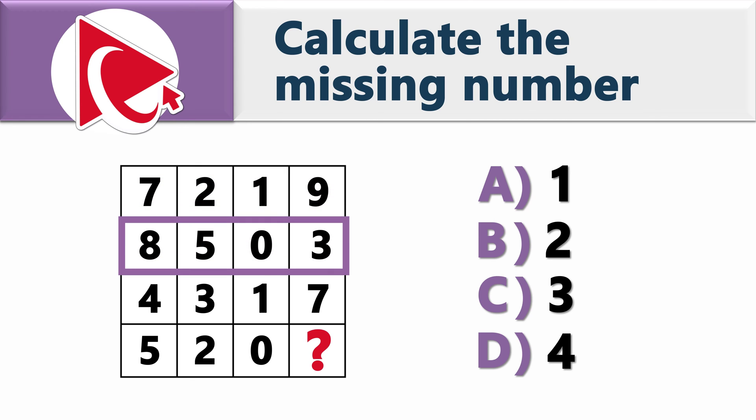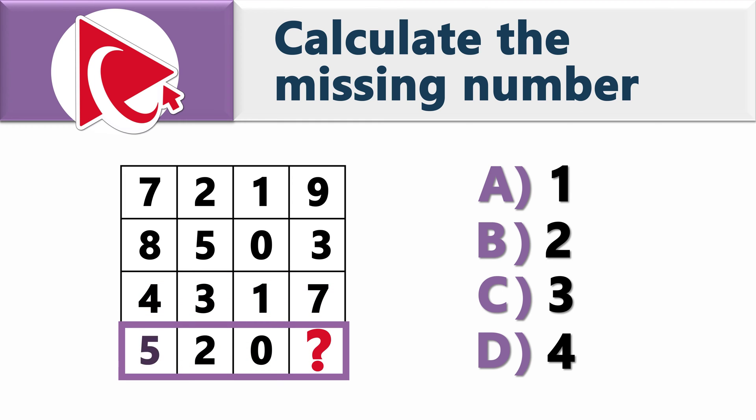Row 2 has 8, 5, 0, and 3. Row 3 has numbers 4, 3, 1, and 7. And row 4 has numbers 5, 2, 0, and then comes the missing number, which you need to calculate and select out of 4 possible choices: 1, 2, 3, or 4. Examine this problem closely to see if you can get to the correct solution.